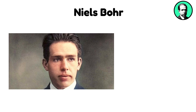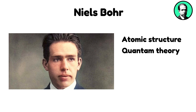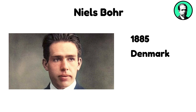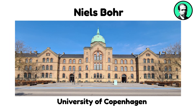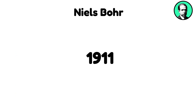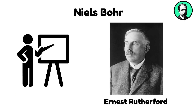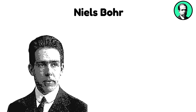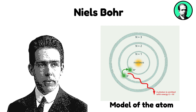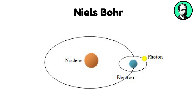Niels Bohr was a Danish physicist who made foundational contributions to understanding atomic structure and quantum theory. Born in 1885 Denmark, Bohr pursued his education at the University of Copenhagen, where he earned his doctorate in 1911. He later studied under Ernest Rutherford in Manchester, England, which significantly influenced his scientific development. In 1913, Bohr introduced a model of the atom that integrated quantum theory with Rutherford's nuclear structure. He proposed that electrons orbit the nucleus in specific, quantized energy levels, and that electrons could transition between these levels by absorbing or emitting energy in discrete amounts, known as quanta.